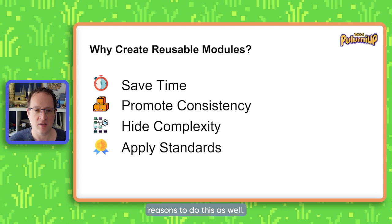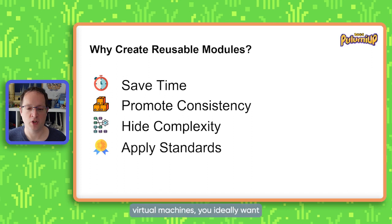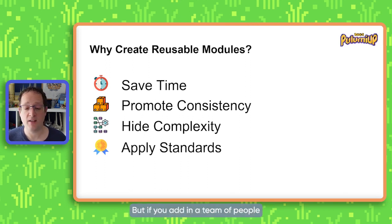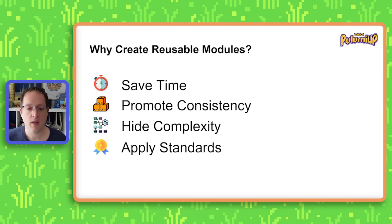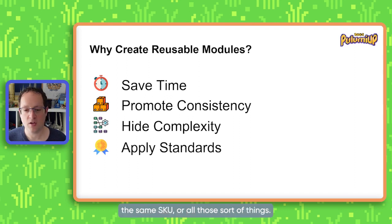But there are other reasons to do this as well. Promoting consistency is a really important thing if you're working with more than just yourself. If you're deploying lots and lots of virtual machines, you ideally want them to be deployed in the same manner every time. If you're rewriting the code every time, you are going to get differences between each deployment. But if you add in a team of people who all have their own ways of doing things, you'll end up with things deployed differently across the team. So if you use a module — write it once — everyone uses that module, you're going to get a consistent deployment, using the same naming conventions, the same type of resource, the same SKU, and all those sort of things.